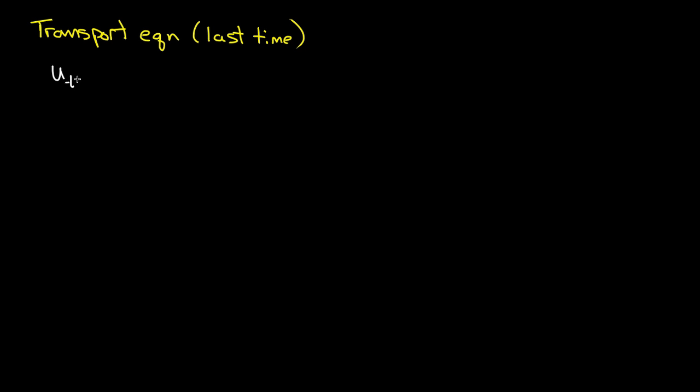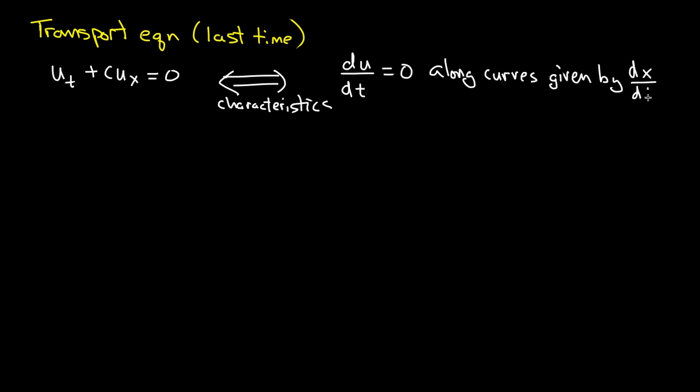And I'm going to do it this time using the method of characteristics the way that I have outlined it before. So what is it? It's u_t plus c u_x equals 0. And the method of characteristics says that this is the same as the statement that